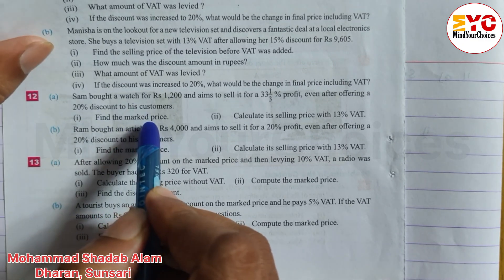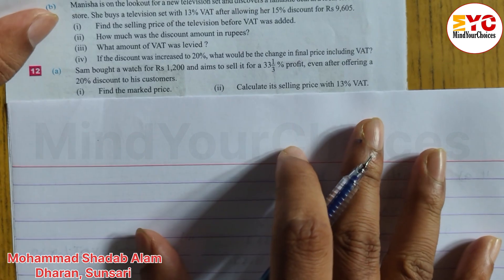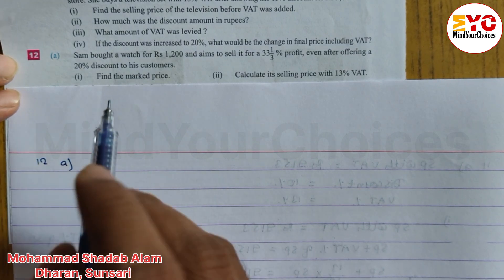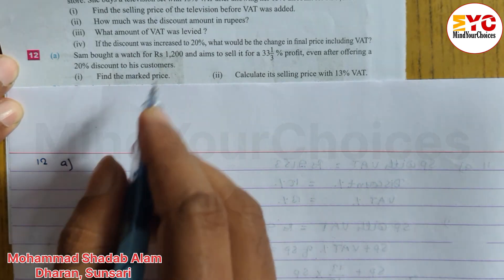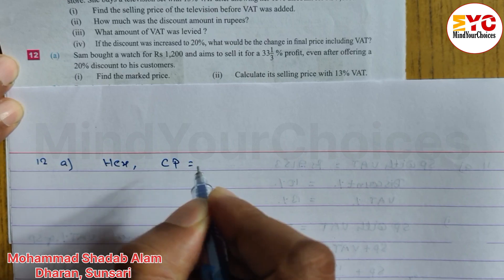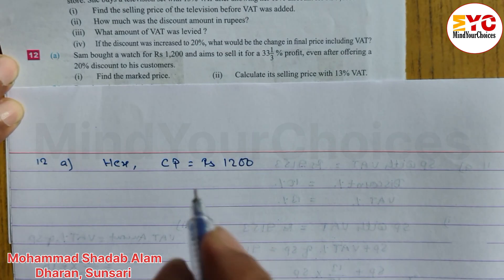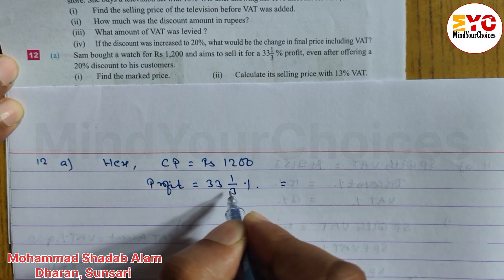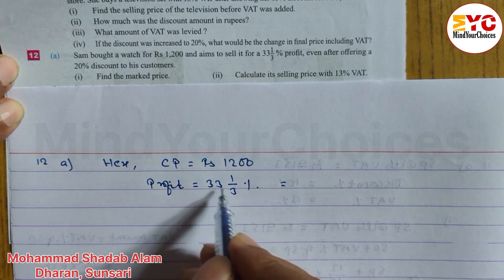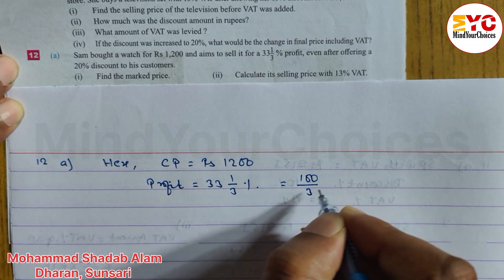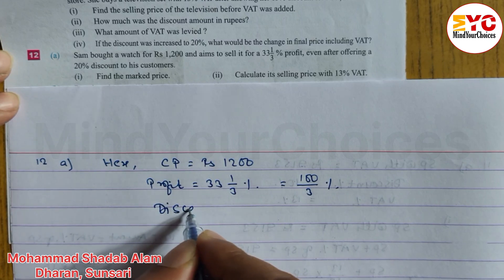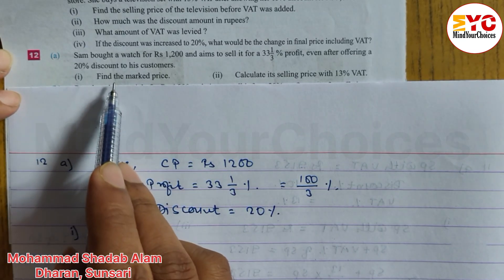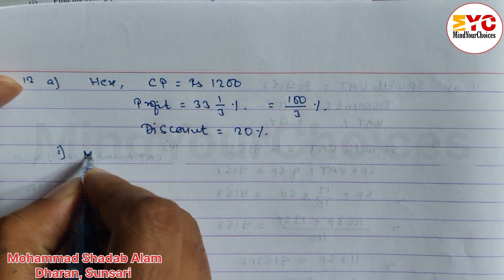Number 1: find the marked price. To find out MP, first of all we have to find out selling price. CP is equal to cost price — Rs.1200. Profit percent is 33⅓%. Discount is equal to 20%. We have to find MP, and to do that we first find SP.